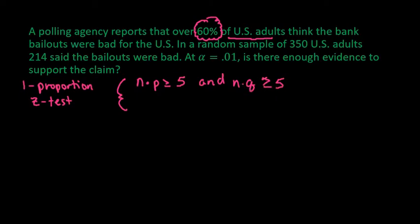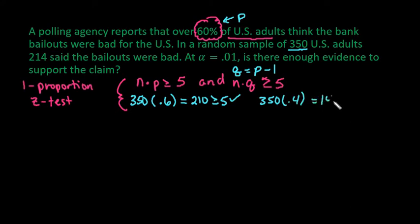Remember that q is found by doing 1 minus p, where p is the percent of the population we are using. We would find n is 350, and we would take this times 0.6, which gives us 210, which is greater than or equal to 5. And n times q, so 350 times 0.4, gives us 140, which is also greater than or equal to 5. This allows us to approximate the binomial distribution with the normal distribution.